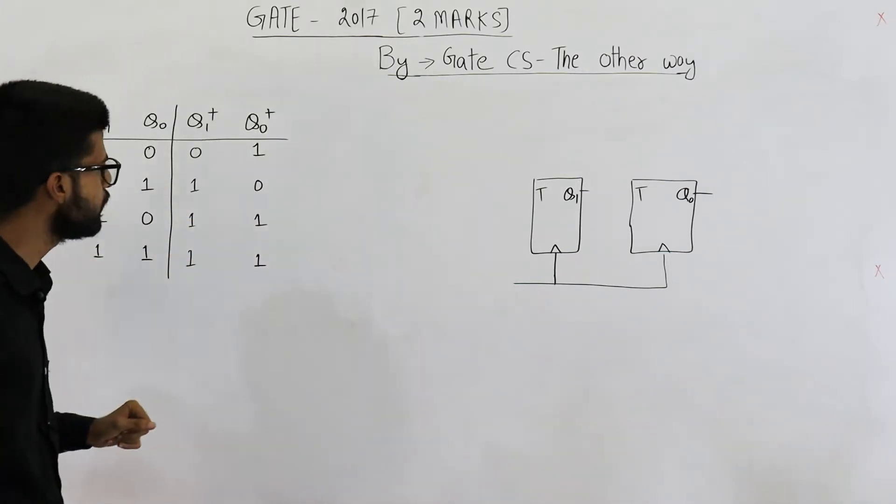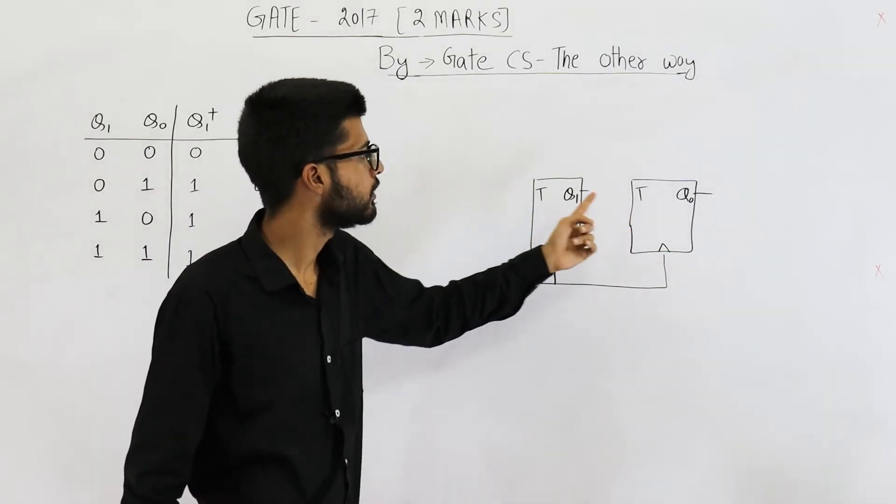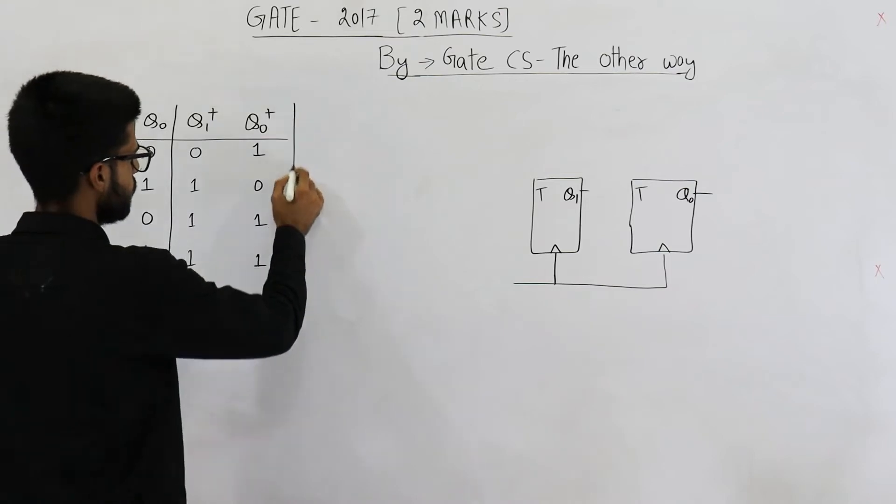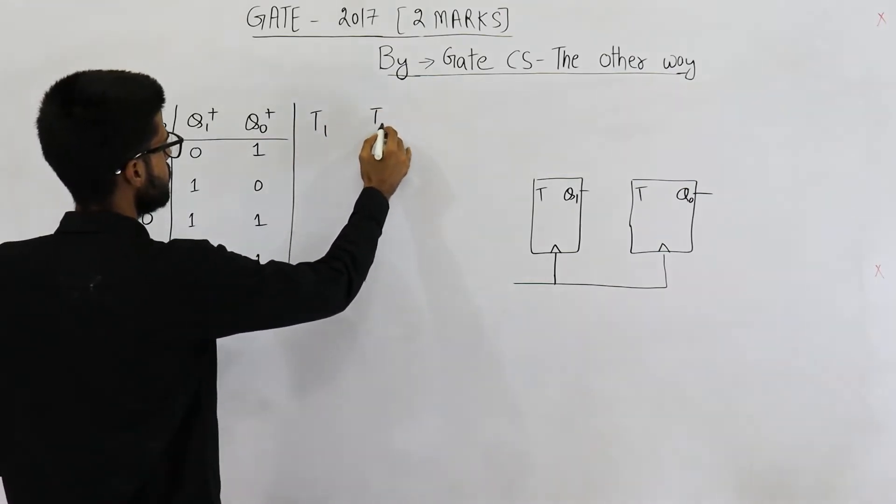Now, if we want to design such a counter using T flip-flops, what must be these inputs? That is asked in the question. So, this one is T1 and this is T0.